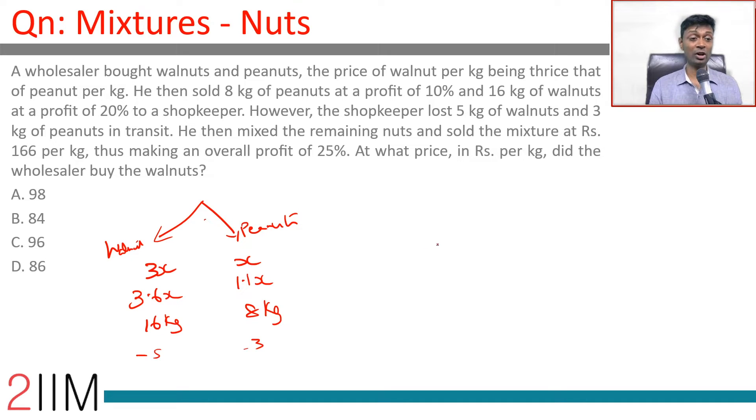sold the mixture at rupees 166 per kilogram. He mixes, so I don't need to care how much of this, how much of this is there. 11 plus 5 is 16, or from 24 we lose 8. He sells 16 kilograms